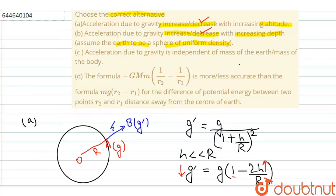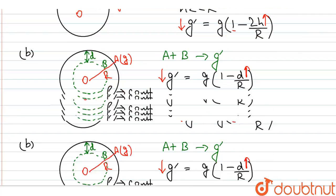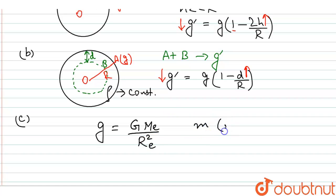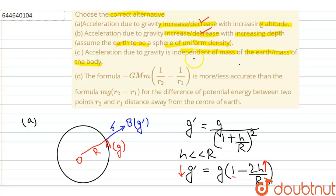Part C: acceleration due to gravity is independent of the mass of the Earth or the mass of the body. I can write the formula for acceleration due to gravity, which is equal to GM/R², where M is the mass of the Earth and R is the radius of the Earth. Here, small m — the mass of the body — will have no effect on g. So the correct option is: g is independent of the mass of the body.